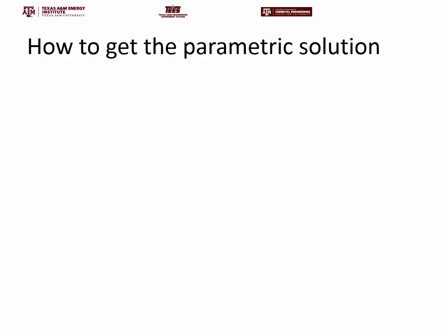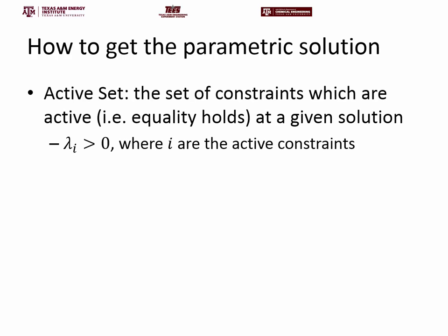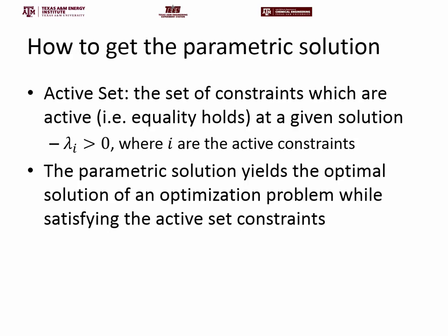This brings me to how you get the parametric solution. Before going into the two methods, I want to briefly touch on what's called an active set. An active set is a set of constraints which are active — meaning equality holds at a given solution. If we have g of x less than or equal to zero, a constraint is called active at x0 if g of x0 equals zero. From the dual perspective, this also means the Lagrangian multipliers of that specific constraint must be greater than zero — excluding degeneracy cases.